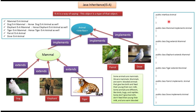In Java, we can define the Is-A relationship like this: interface Animal, and class Mammal implements Animal, and class Dog extends Mammal, class Elephant extends Mammal, Tiger extends Mammal, Parrot implements Animal, Dove implements Animal.